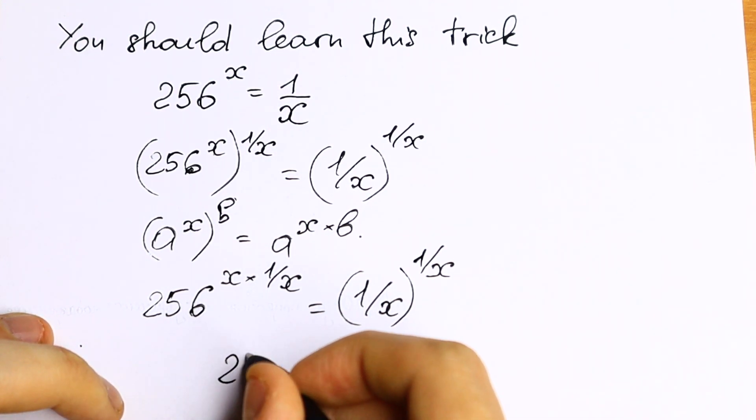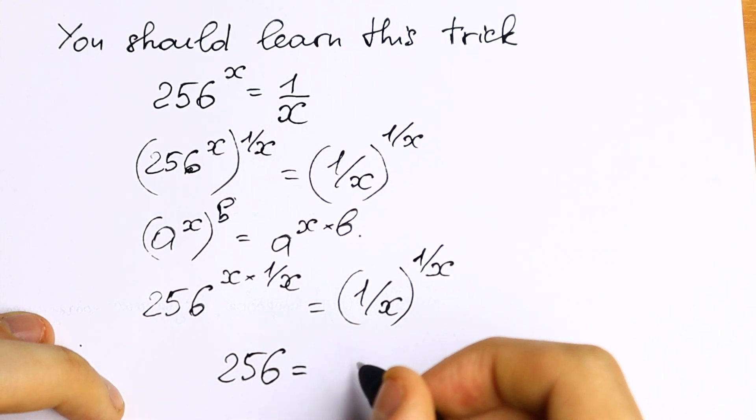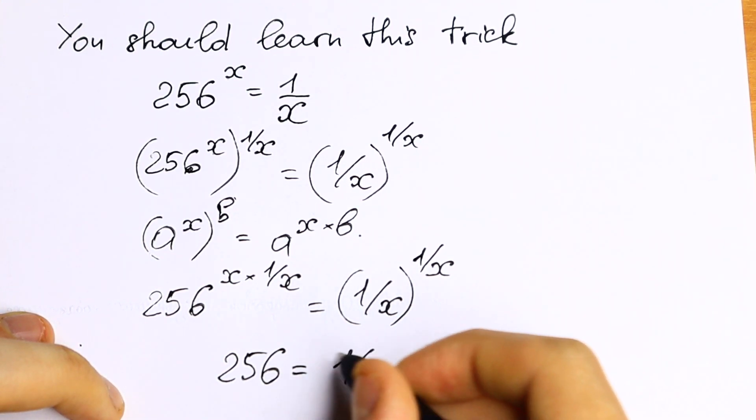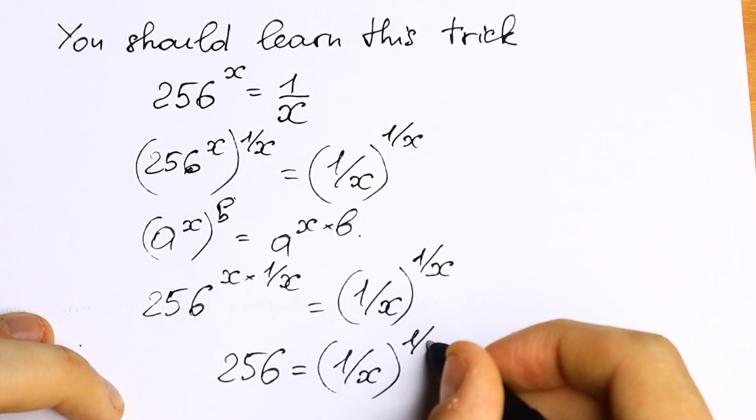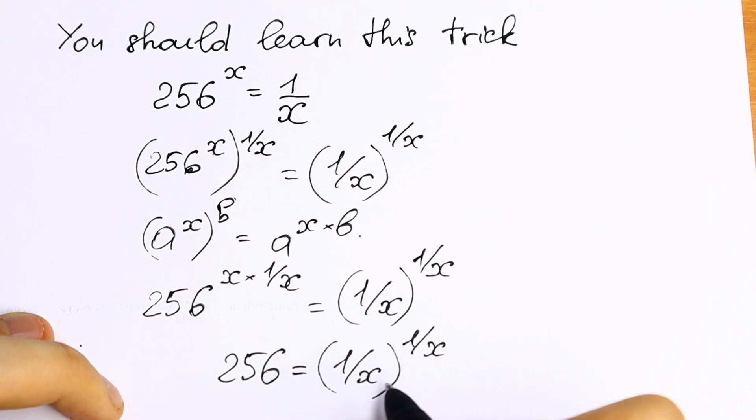So as a result we will have our equation 256 equal to 1 over x to the power 1 over x. And take a look, on the right we have same base and same exponent. We have 1 over x to the power 1 over x.